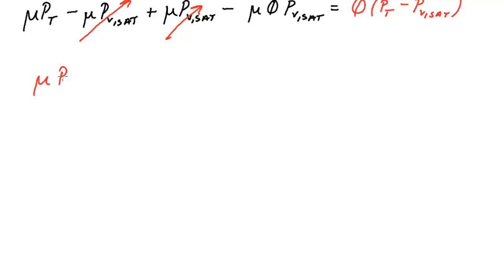We're left with the mu times the total pressure. And if I move this term to the other side and I pull out that phi, I have the original two terms, but now I added this term over here and undistributed this. So I have a plus mu PV sat on this side. And now what we've successfully done is isolated out the relative humidity. So now we just have to solve for that.